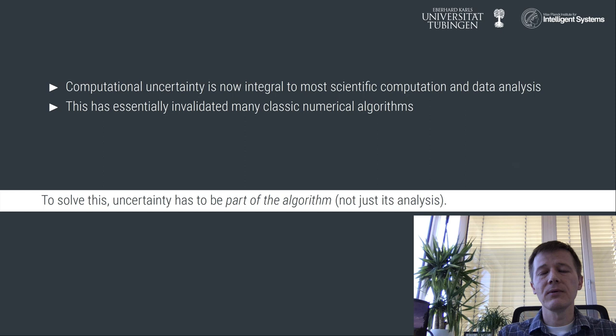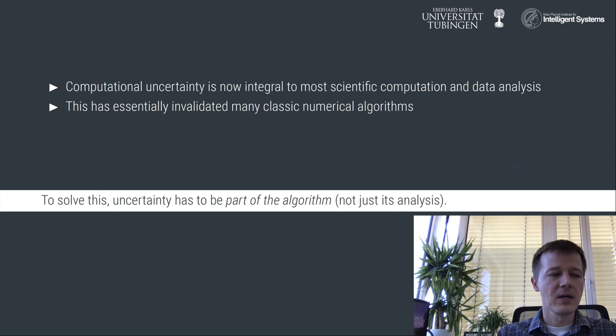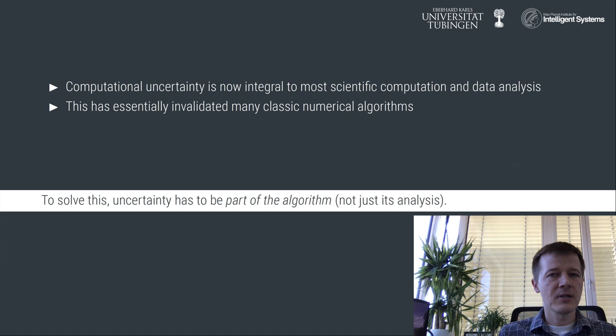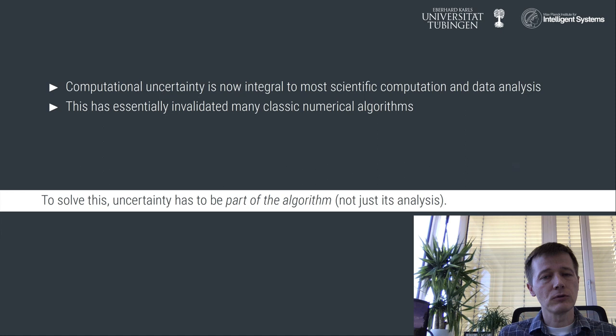To summarize: computational uncertainty is now integral to most scientific computation and data analysis, and it has essentially invalidated many classic numerical algorithms because those methods were developed without a direct role for uncertainty. To solve this issue, uncertainty has to become a part of the algorithm — not just its analysis. Stability analysis is useful, but it's something you do on paper to an algorithm already running. What we need are algorithms that have this uncertainty — sigma — as a parameter inside themselves, and use it and maybe even control it to improve their performance.